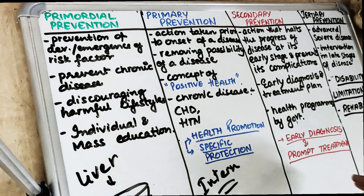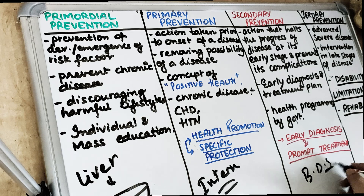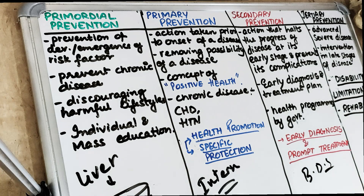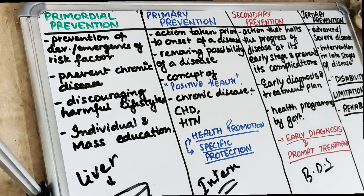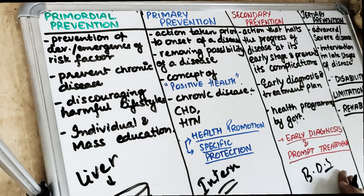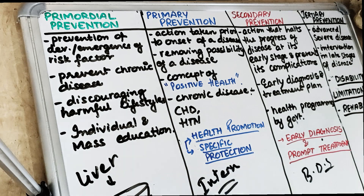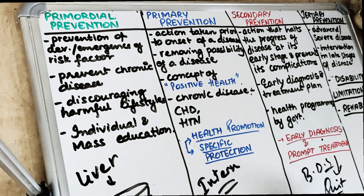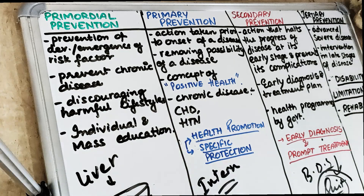Next comes the secondary level of prevention. Now that you have passed your BDS and started going to parties, started a little bit of drinking here and there with friends. This level of prevention is when you are at early stages — I can ask you to quit. Asking you to quit at the early stages is the secondary level of prevention.